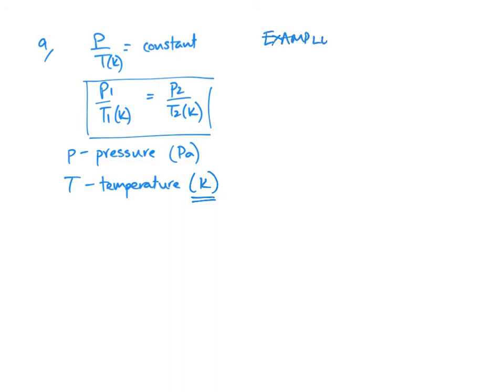So for example, an aerosol can at 27 degrees Celsius—you'll see these numbers come up quite often because they make the calculations quite easy—has a pressure of 3 times 10 to the power 5 Pascals. You'll notice there's warnings on aerosol cans saying don't expose to direct sunlight, don't put in fires. So let's see why that might be a problem.